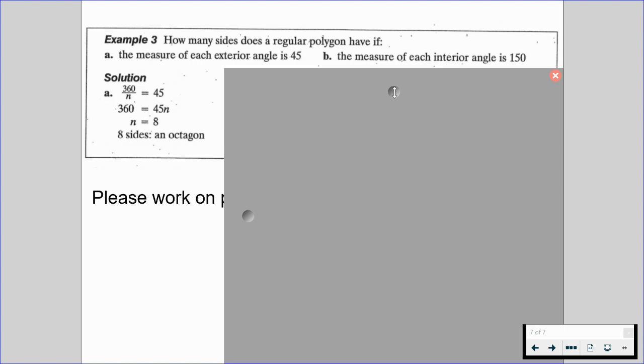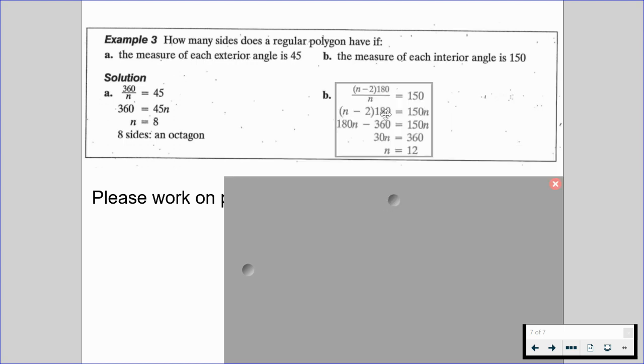And the measure of each interior angle we know is 150. So we're going to take a similar approach here. We're going to do n minus 2 times 180 divided by n. So it's the number of sides minus 2 multiplied by 180 gives us our grand sum, and we divide that by the number of sides.